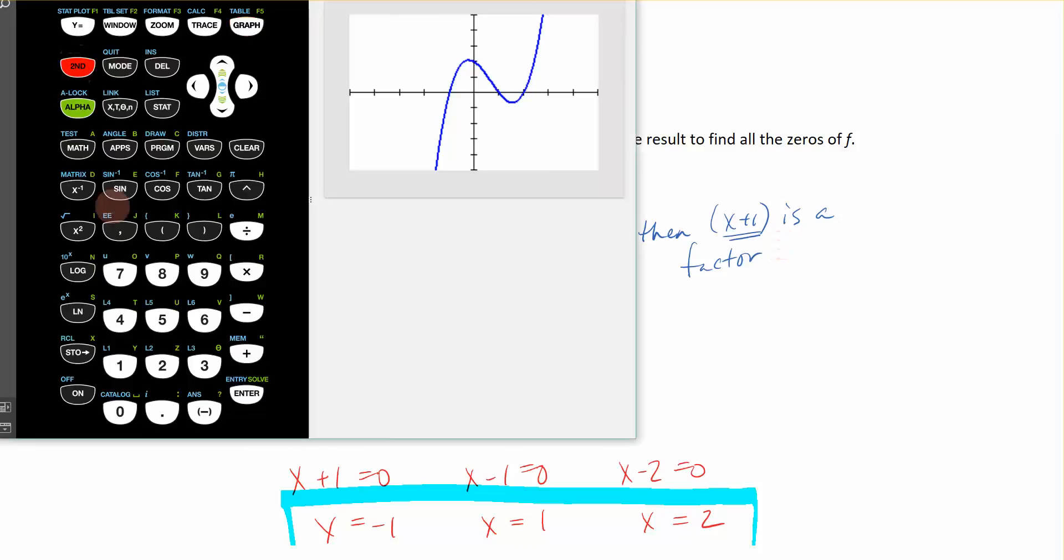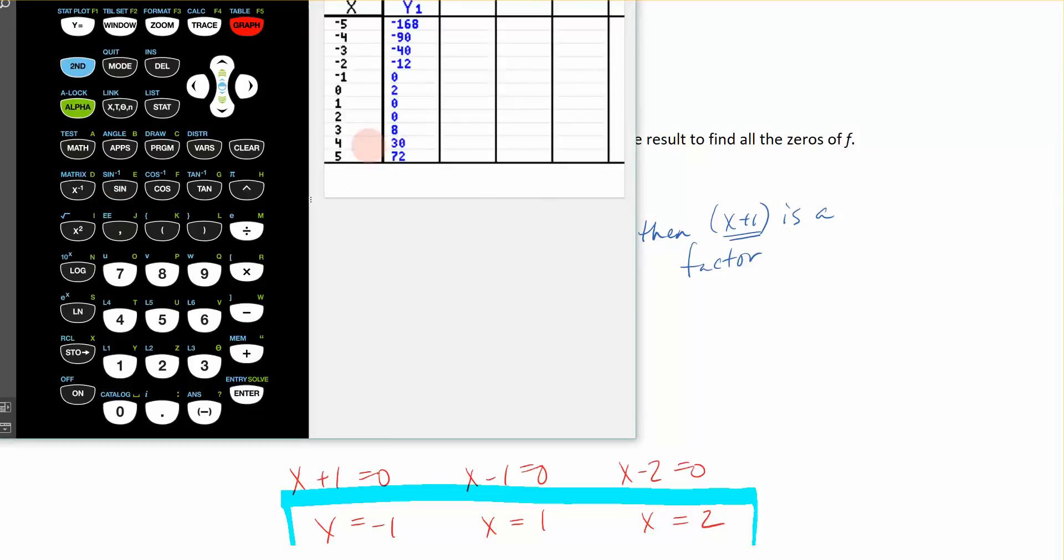Also, if I were to go look at the table of this function, I would see that if I have a 0 of the function, so if my x value is a 0, then the y equals 0. Let me say that again. Remember, if x is equal to negative 1, then y is equal to 0. And that's what I have here.